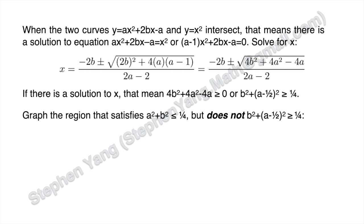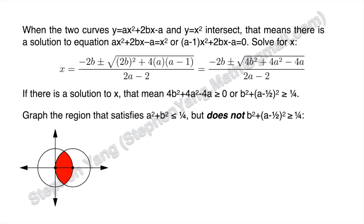Now let's graph the region that satisfies a squared plus b squared less than or equal to one quarter, but does not satisfy b squared plus (a minus one half) squared greater than or equal to one quarter. We get this graph. We only need to find the ratio of this red region to the full circle, then subtract from 1 to get our probability.